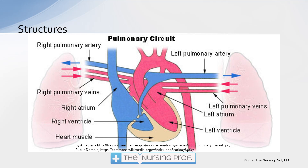So we would lose some of that perfusion. There is a separate set of vessels called the bronchial circulation that feeds the lungs themselves. So just because we have a blockage in one of these vessels from a PE does not mean that the lungs are going to have the same kind of response as we would have with a clot somewhere else, where we would have ischemia, injury, and necrosis.